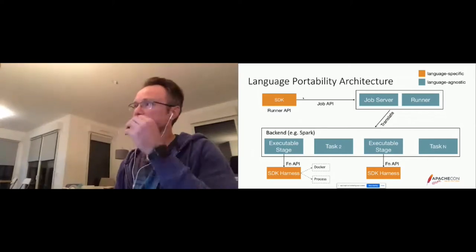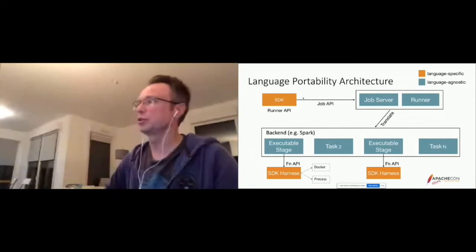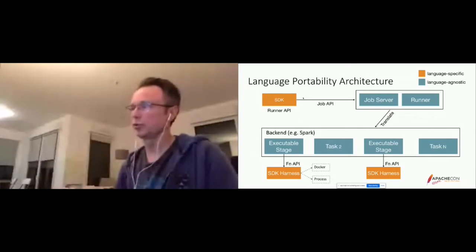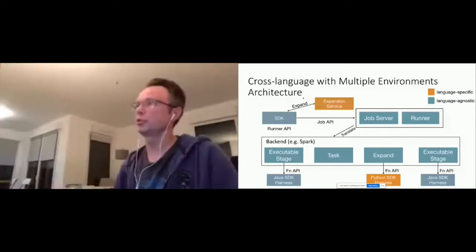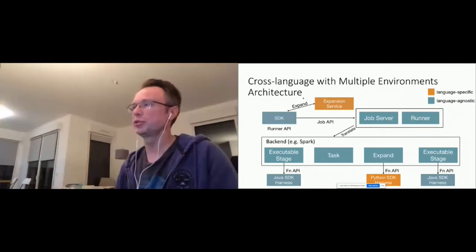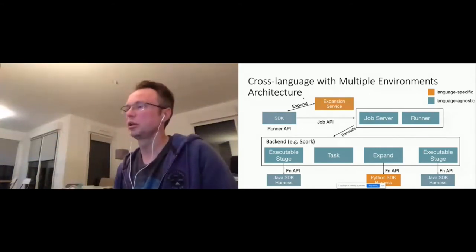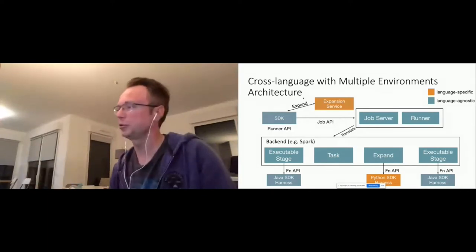For a Java-Python cross-language pipeline, we additionally need to run an expansion server for the external transforms — in this case Python transforms. This service contains all the code for our external Python transforms. The SDK gets information from the expansion service — code to execute, coders, and other information — which is added into the portable pipeline representation and sent to the job server. On the backend, when executing stages, a different SDK harness runs for each SDK: Java SDK harness for Java, Python SDK harness for Python.